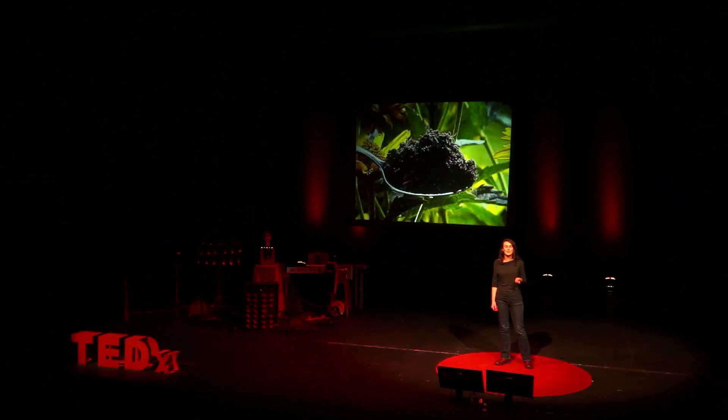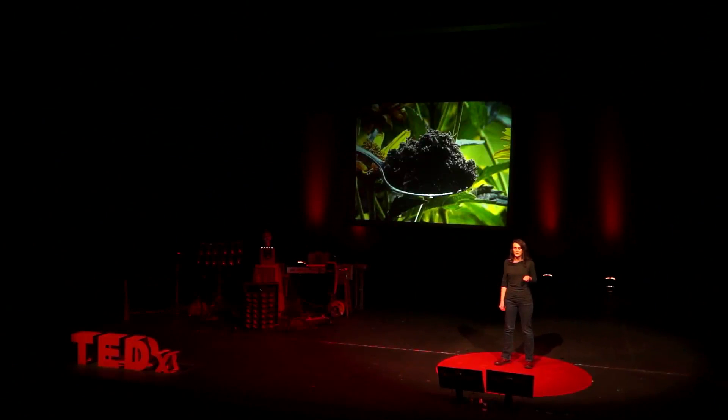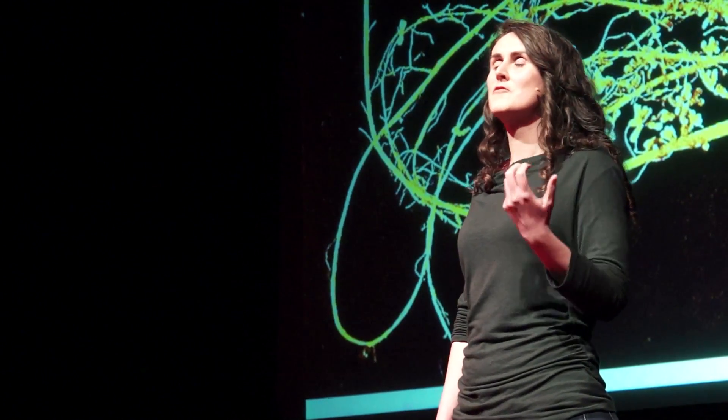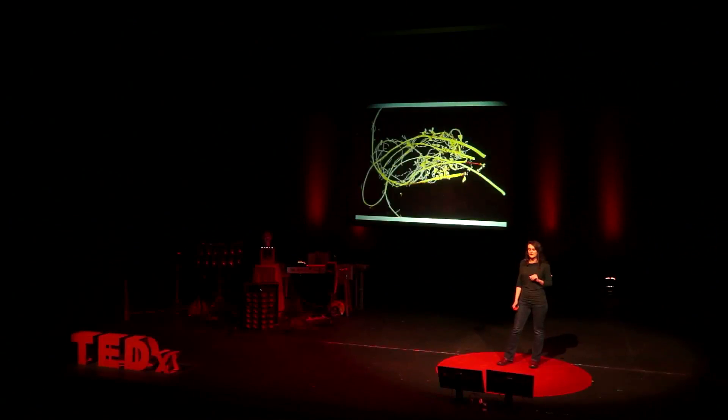A huge number — far more species than there are species of mammal. And these bacteria, they're not just passively sitting there next to each other. They're engaged in complex interactions. These interactions provide nutrients which we need. All of the naturally occurring bioavailable nitrogen, which plants need for their growth, is fixed from the atmosphere by the action of bacteria, either living in association with the roots of plants or freely living in the soil.